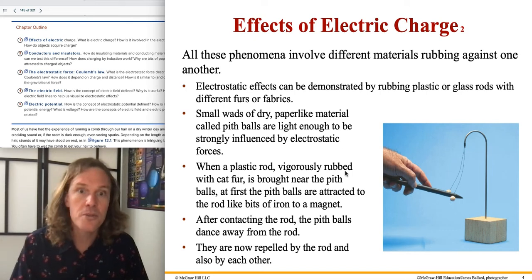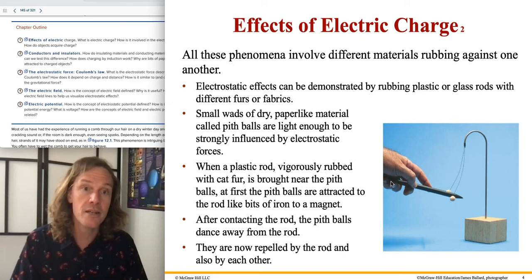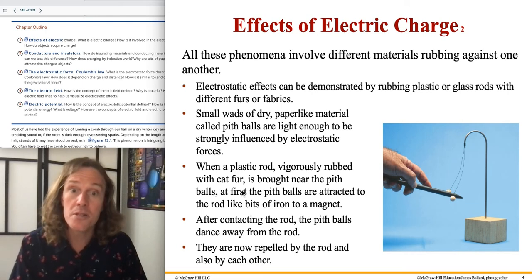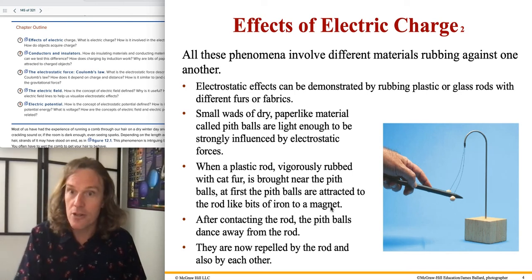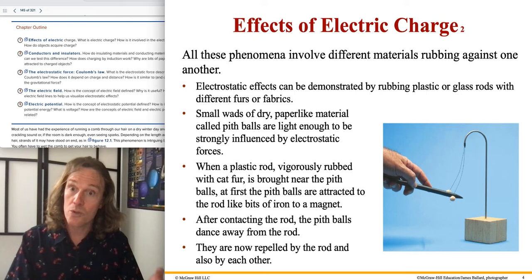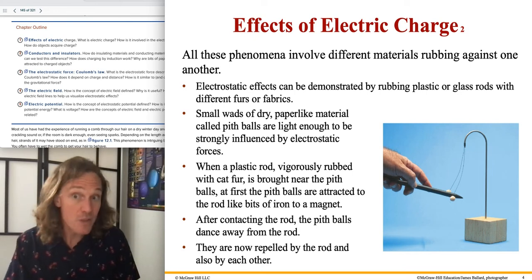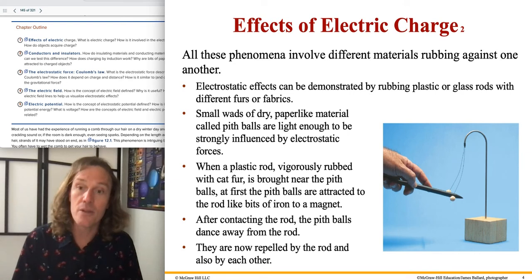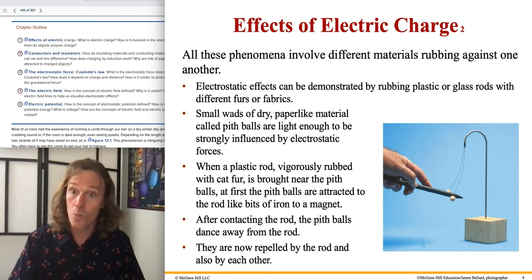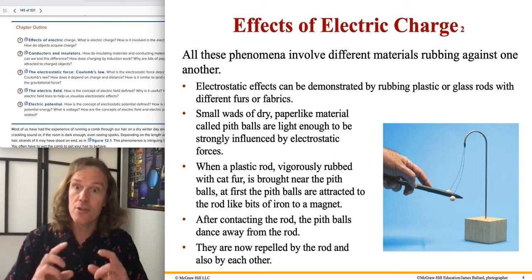In the demonstration, a vigorously rubbed plastic rod — an insulator — is brought near the pith balls. At first the pith balls are attracted to the rod, like bits of iron to a magnet. Iron is easily magnetized in the presence of a permanent magnet — a great example that shows magnetic field lines closely related to electric field lines.